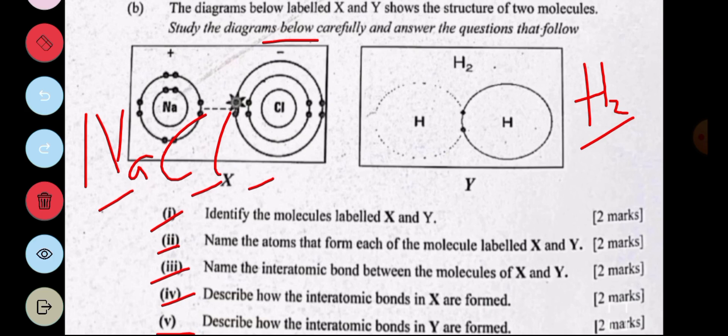Part V, describe how interatomic bonds in Y are formed. With covalent bonds, they are formed when there is a sharing of electrons.